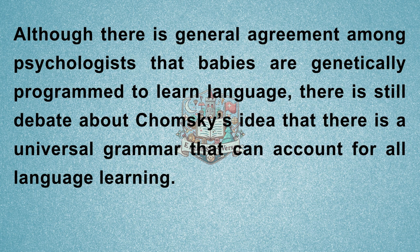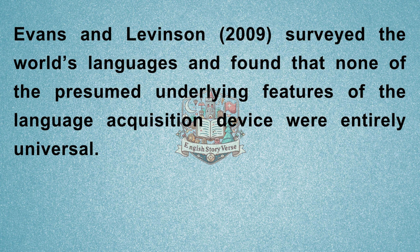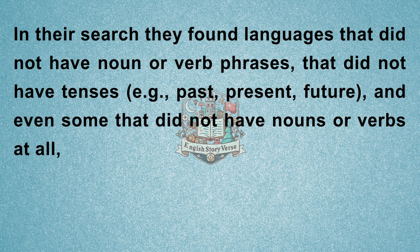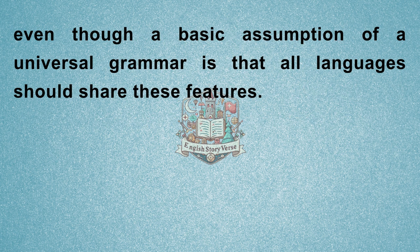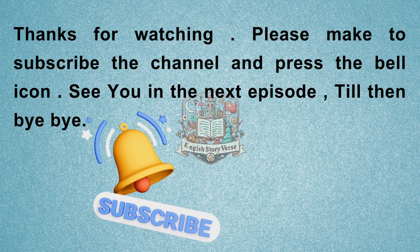Although there is general agreement among psychologists that babies are genetically programmed to learn language, there is still debate about Chomsky's idea that there is a universal grammar that can account for all language learning. Evans and Levinson (2009) surveyed the world's languages and found that none of the presumed underlying features of the language acquisition device were entirely universal. In their search, they found languages that did not have noun or verb phrases, that did not have tenses such as past, present, or future, and even some that did not have nouns or verbs at all — even though a basic assumption of universal grammar is that all languages should share these features.